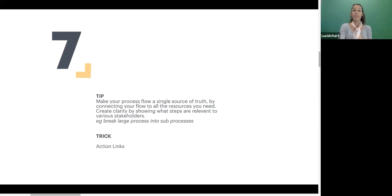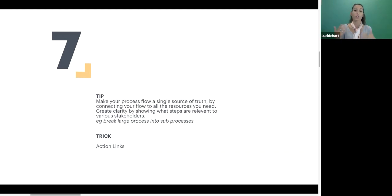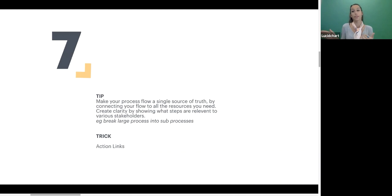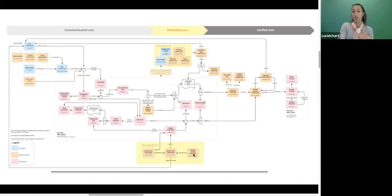Tip number seven is making your process flow a single source of truth. Oftentimes when you're adopting or implementing a new process there are going to be a lot of resources that are relevant — articles, Google Docs, emails. If you have to go to all these different places to find the information you need, it's going to be a lot harder to adopt that process. If you have one diagram that's a single source of truth and it includes your sub-processes and documentation, people are much more likely to use it. This is an example of an interactive diagram that links out to a bunch of other resources.